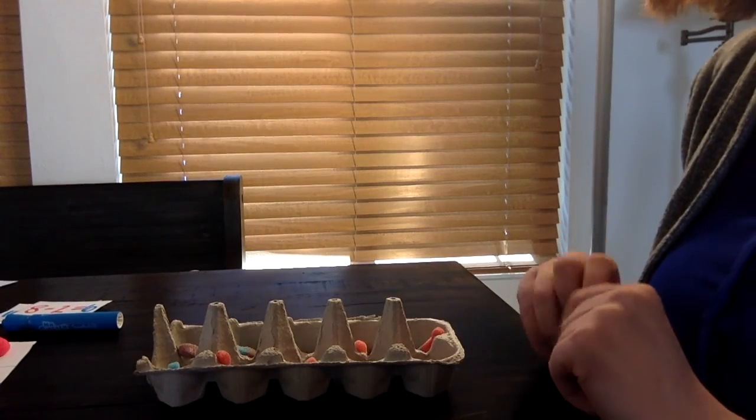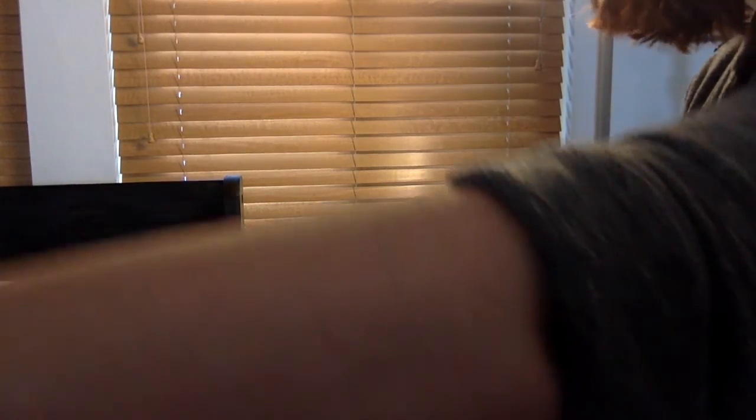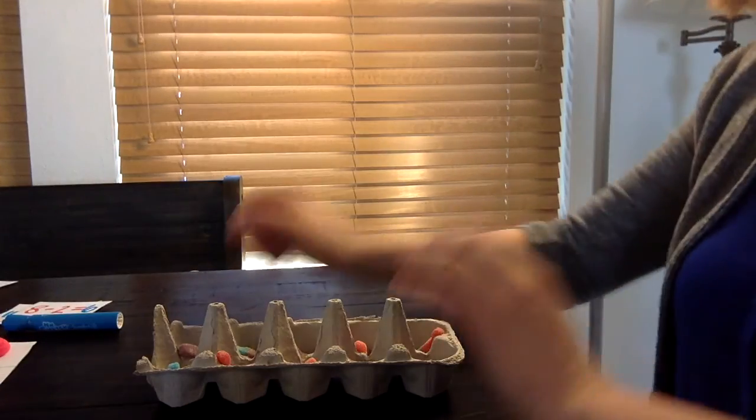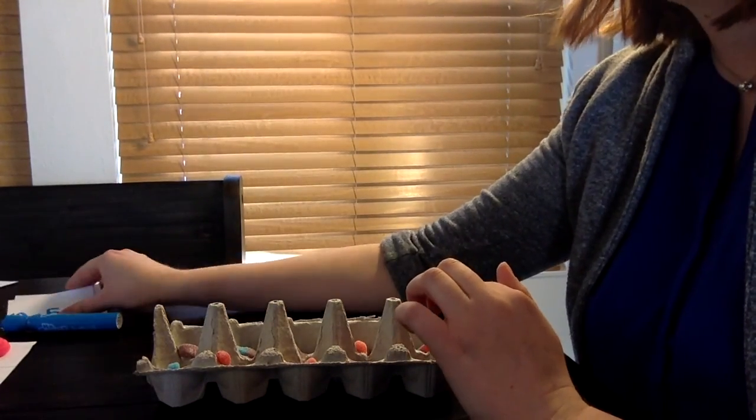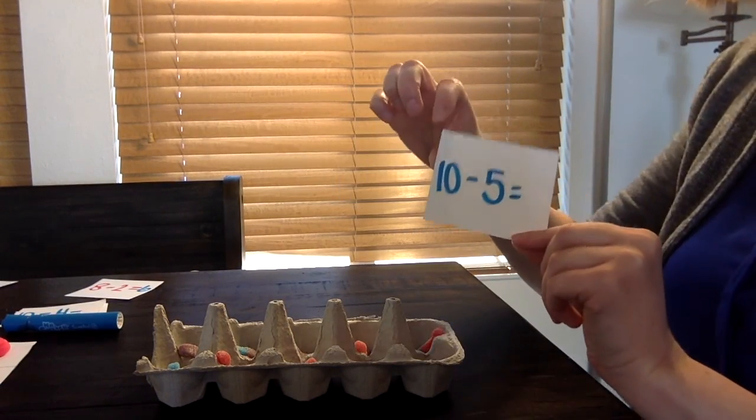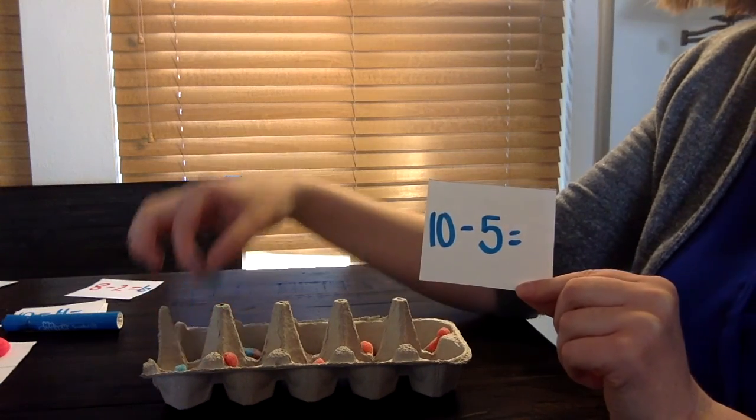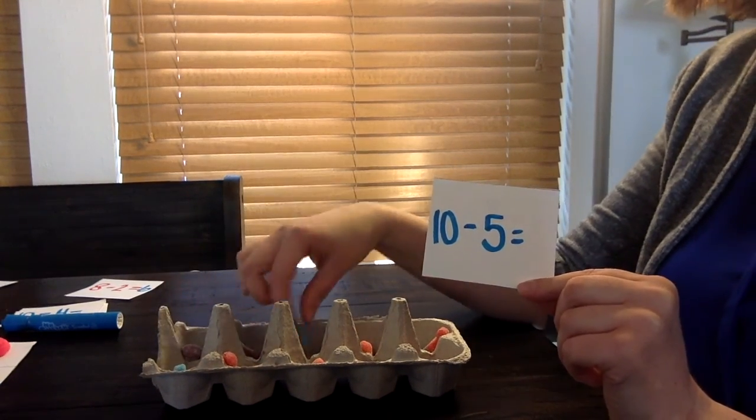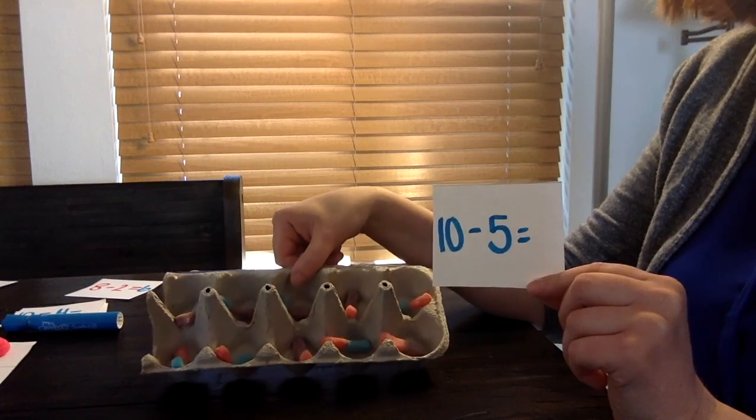And you're going to need some kind of small objects or candy. I used my favorite candy. I had this on hand. I had sour gummy worms. So for this activity, I'm going to take my card, my subtraction card. I'm going to start with 10.